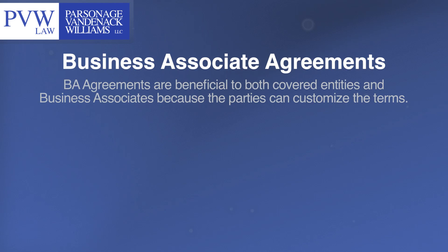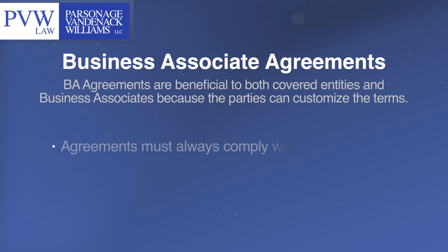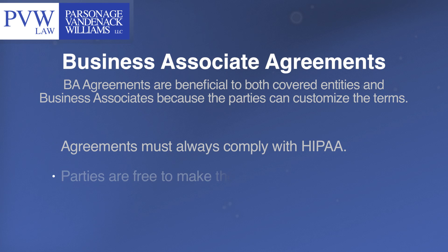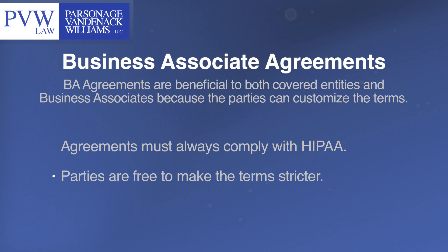Business associate agreements are beneficial to both covered entities and business associates because the parties can customize the terms of the agreement for the specific relationship. While the agreements must always comply with HIPAA, the parties are free to make the terms stricter. For example, a covered entity could require more timely notice provisions in the event that a business associate discovers a breach.